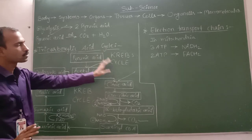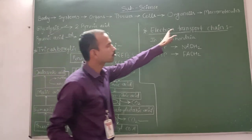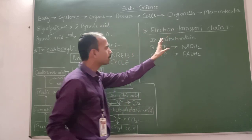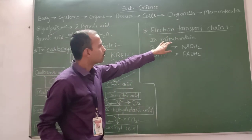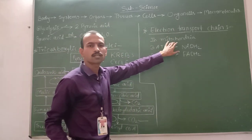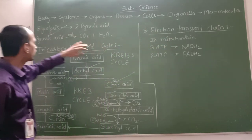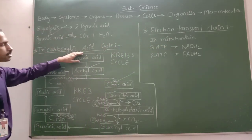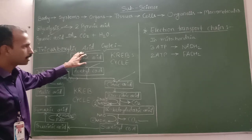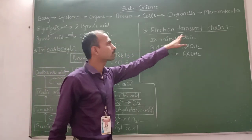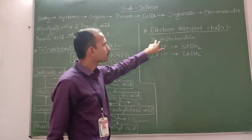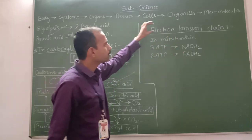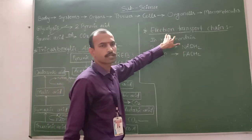The next step is the electron transport chain. Glycolysis and the tricarboxylic acid cycle take place in the region of the cytoplasm, but the electron transport chain takes place in the region of the mitochondria.